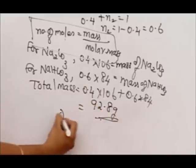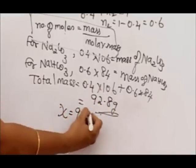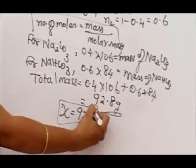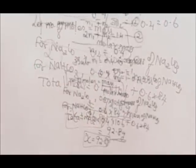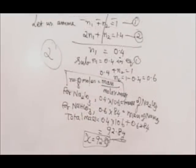What is x? x is 92.8 grams. Therefore, in the given options, option 2 shows this answer. Therefore, option 2 is right.